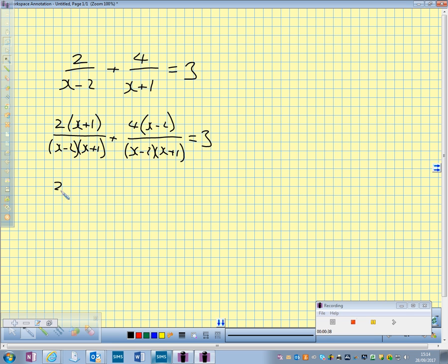Joining them together now, we get 2 upon x plus 1 plus 4 upon x minus 2 all over x minus 2, x plus 1 equals 3.